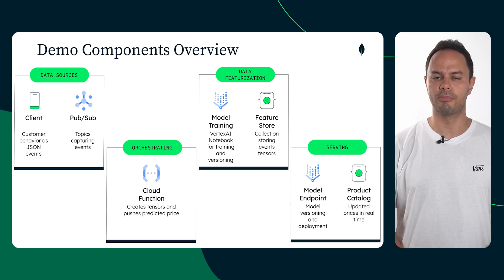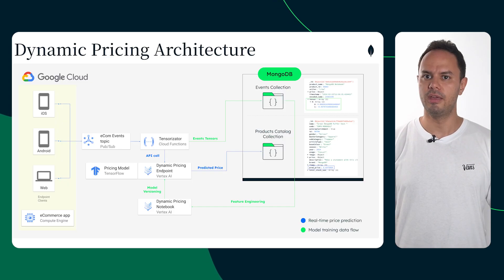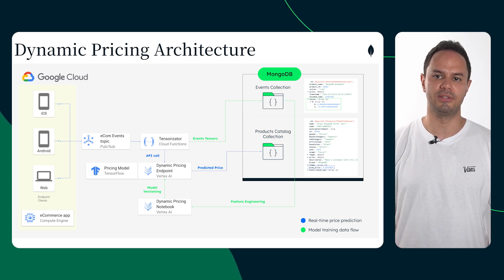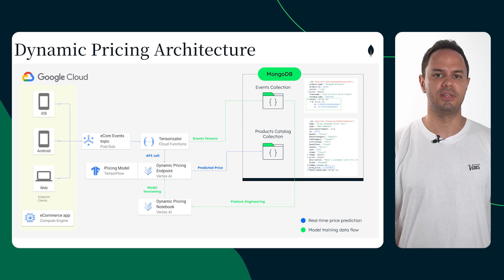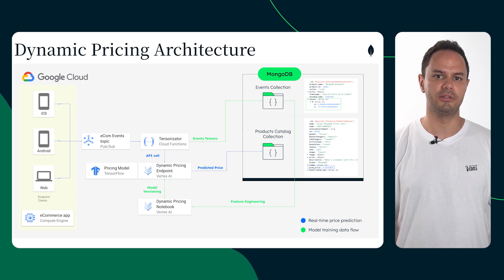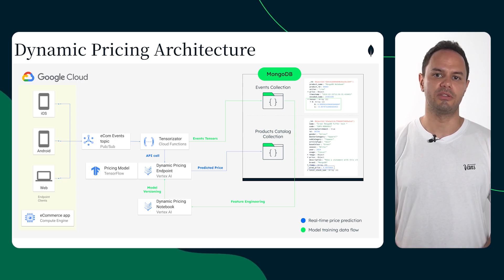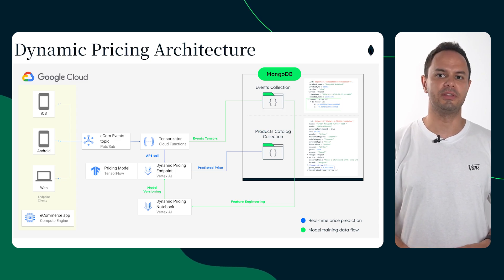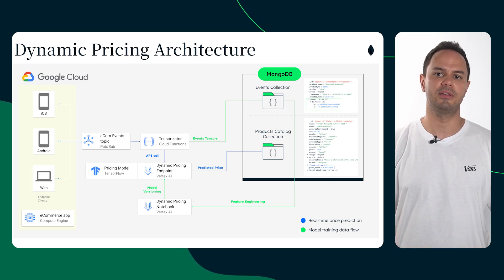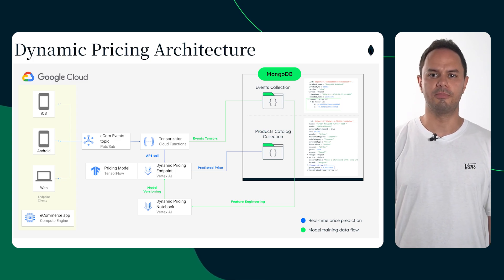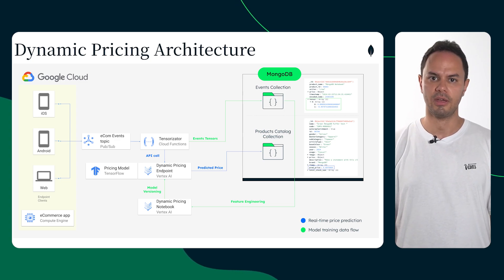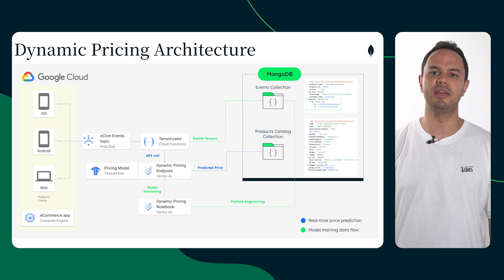A single source of truth for all products across all our channels. Here you can see an overview of the architecture for the solution. MongoDB serves as the operational data layer storing and managing crucial information throughout the system. User behavioral data from different applications is captured and funneled into a PubSub topic for real-time messaging. We subscribe a cloud function to such a topic to process these events, transforming raw data into tensors suitable for the TensorFlow machine learning model hosted on Vertex AI's endpoint. The model will return the optimal price point based on the customer behavior and will be inserted back into the product catalog MongoDB Atlas collection, so our e-commerce application can update prices in real-time.